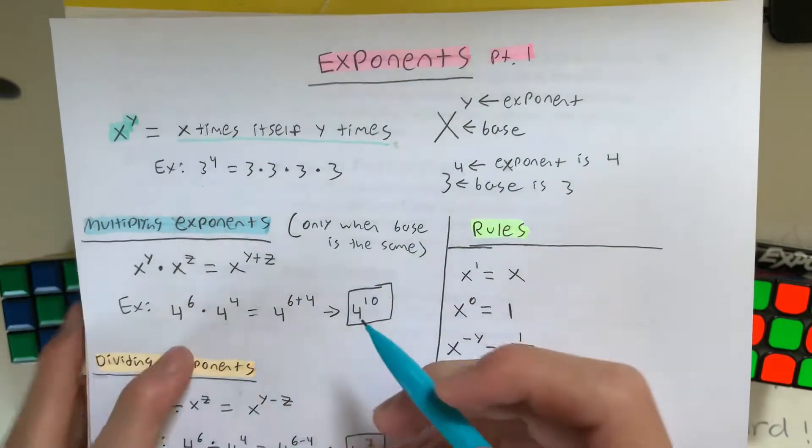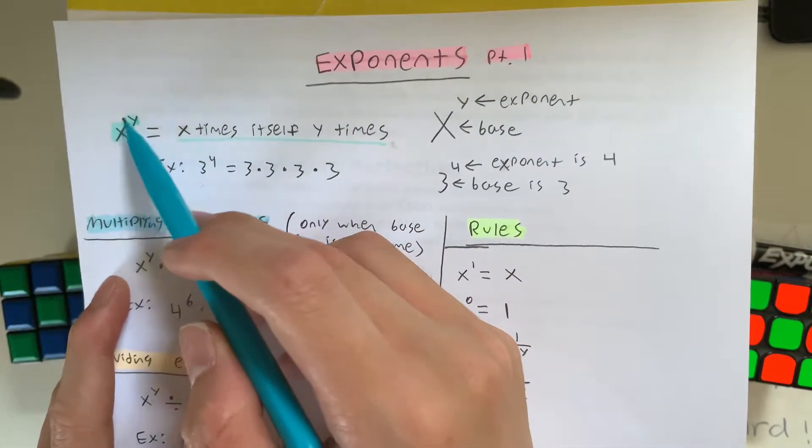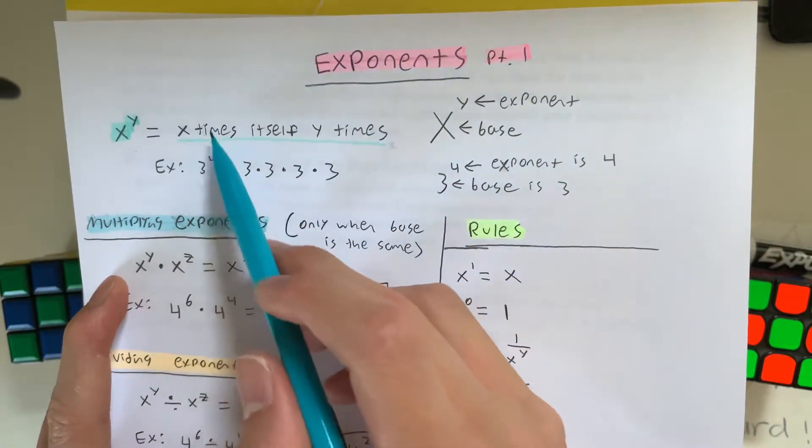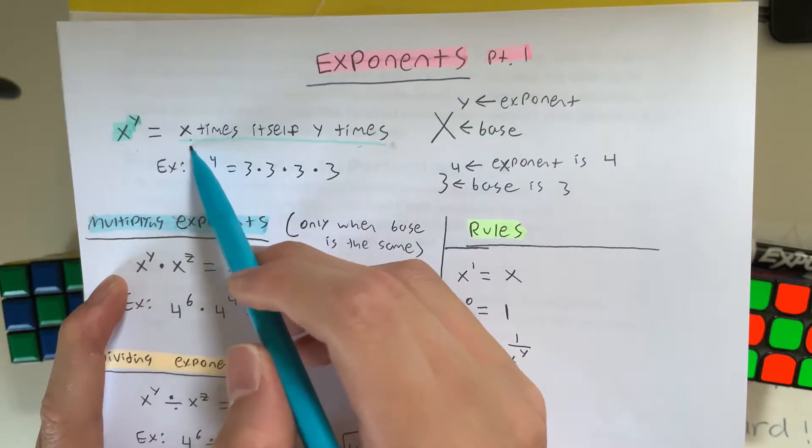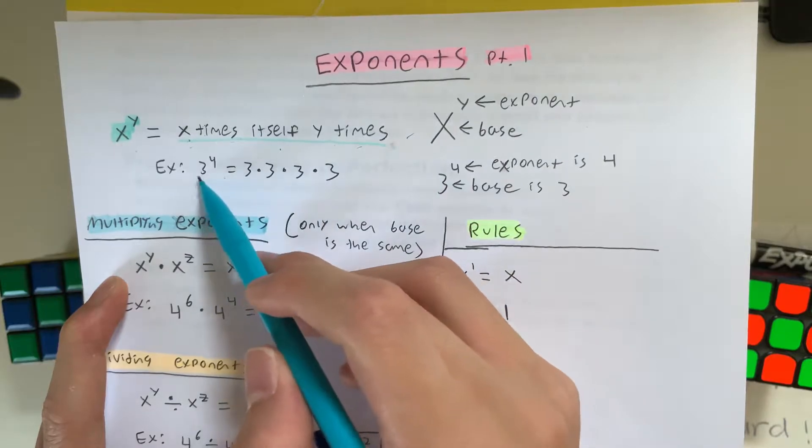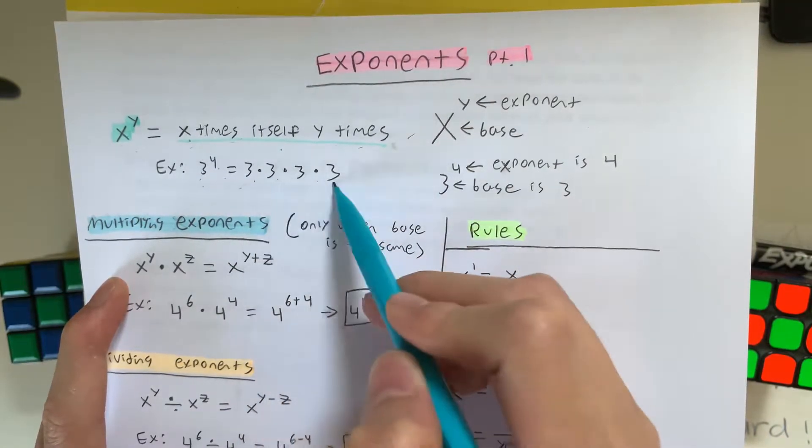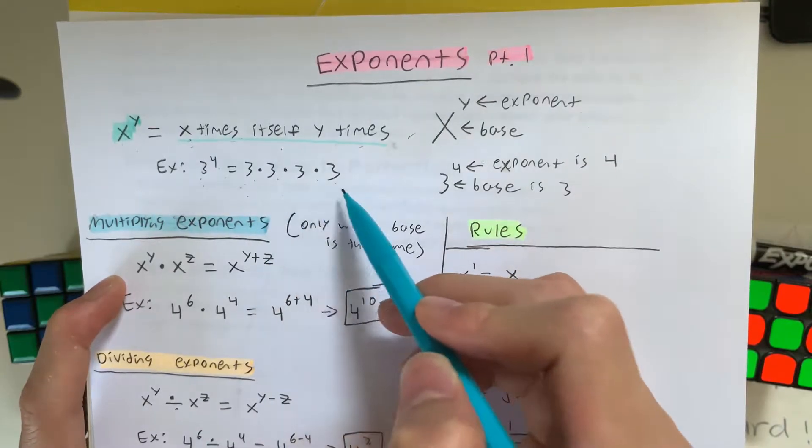So what is an exponent? Well first, let's look at this. It's essentially x to the y power. So that's what it says right here, and it means x times itself y times. So an example is 3 to the 4th is basically equal to, you multiply 3 four times. So 3 times 3 times 3 times 3.